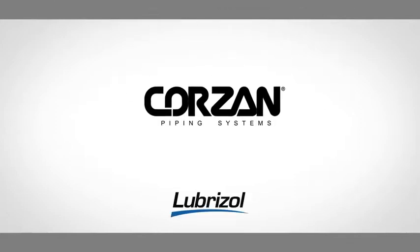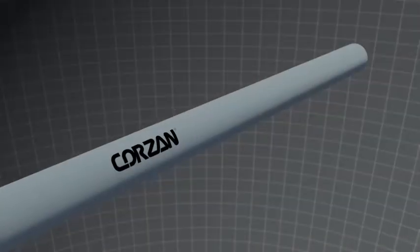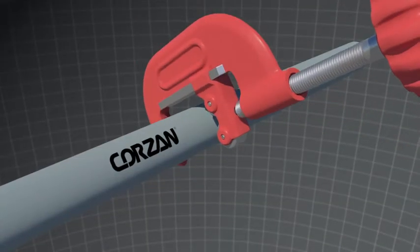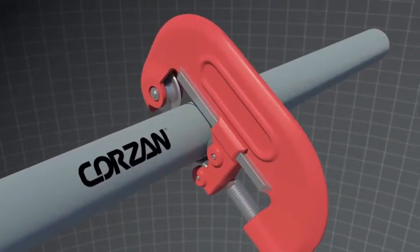Let's look at the process of solvent welding Corzan CPVC pipe and fittings. First, measure and cut the pipe to length with an approved tool or saw. Ensure that the pipe is cut square to ensure proper joining.